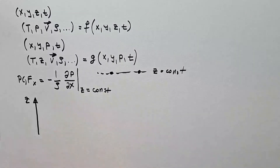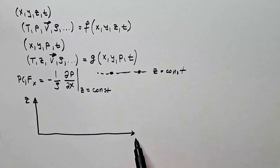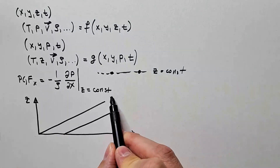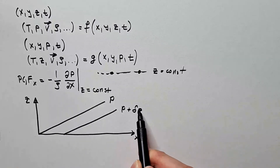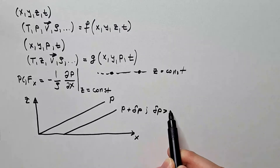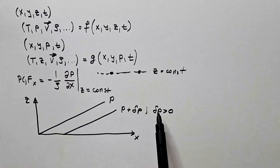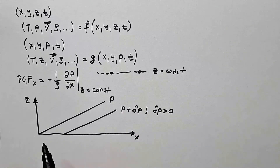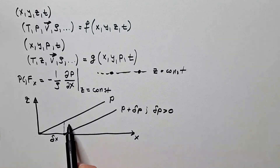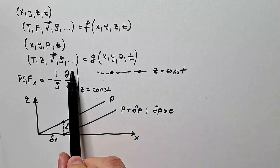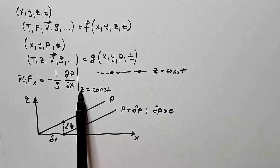Here is the height z, and here is the x-axis. We can generalize this to the y-axis as well. Let's say I have two lines of constant pressure: this one is p and this one is p plus delta p. Notice that delta p needs to be positive because as we approach the surface the pressure increases — in other words, pressure decreases with height. Now let's look at this triangle that has one side delta x and height delta z.